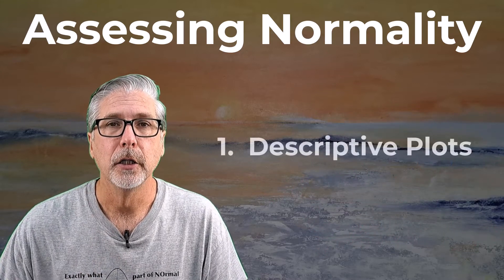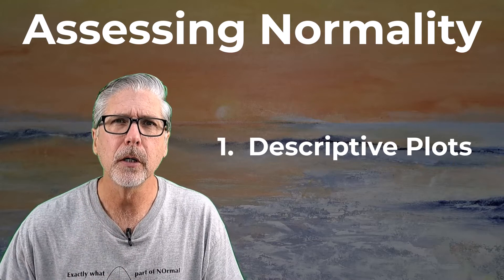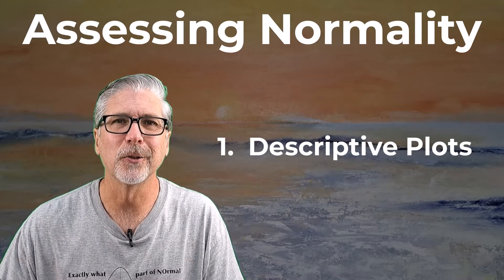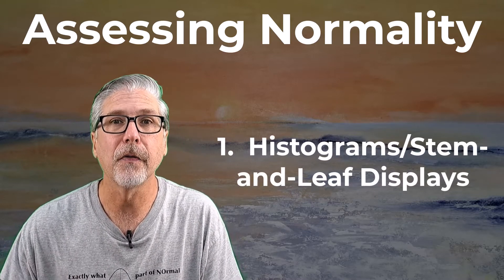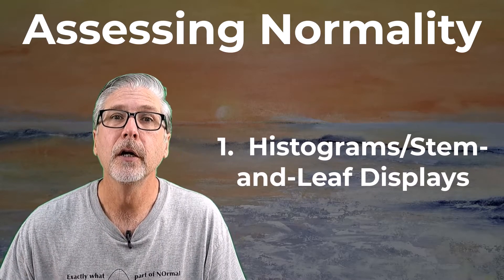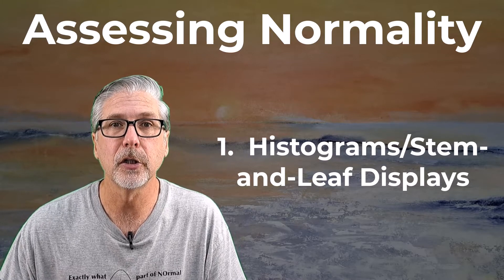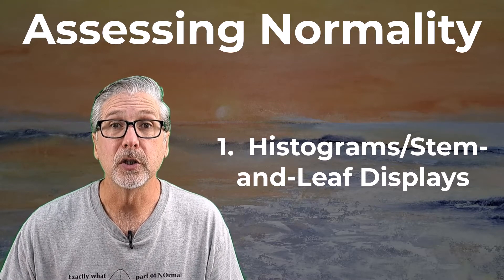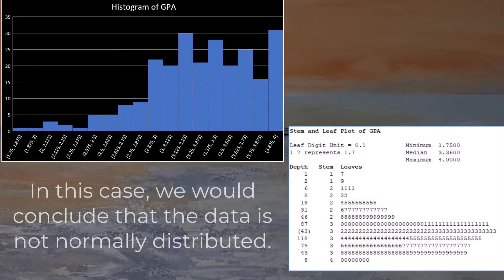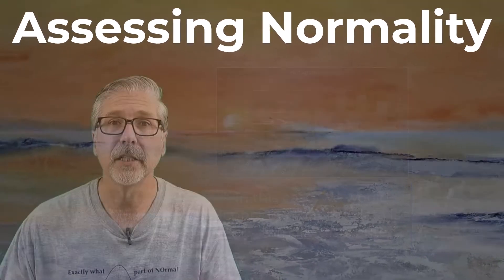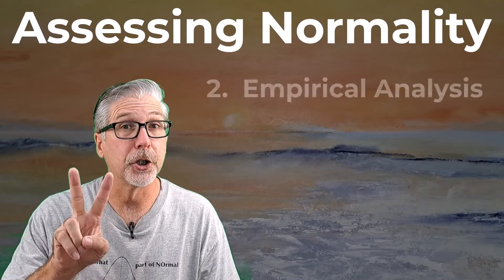Number one: descriptive plots. Remember the good old days when we were looking at histograms and stem-and-leaf displays? Turns out those are some pretty useful tools for determining if data are normally distributed or not. What you should do is get your data set and use a software package to create either a histogram and/or a stem-and-leaf display and take a look. Does it exhibit that classic bell-shaped curve that is indicative of normal curves? That's it — simple.